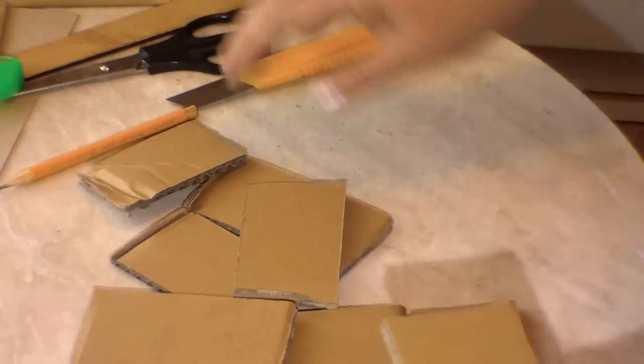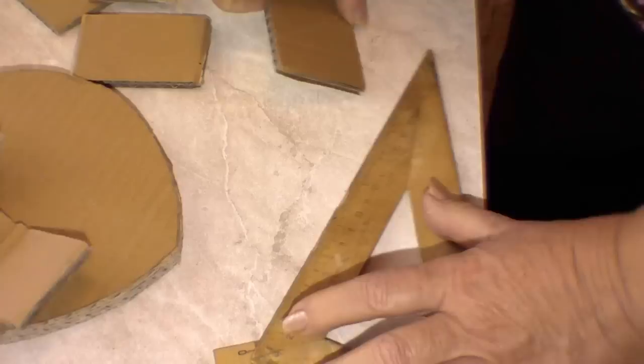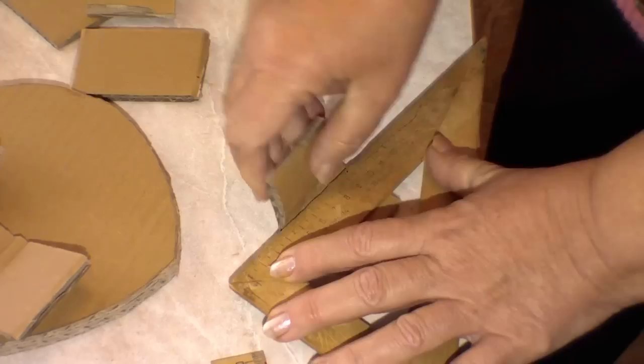Now, we bend these pieces randomly. I do it this way. Place a ruler to a piece of cardboard and bend it like this. You can do without a ruler, but I find it easier this way. At any point, no matter how, I just bend as many pieces as we need for our form.